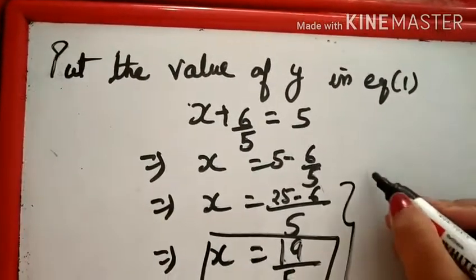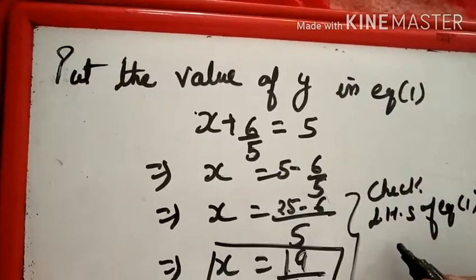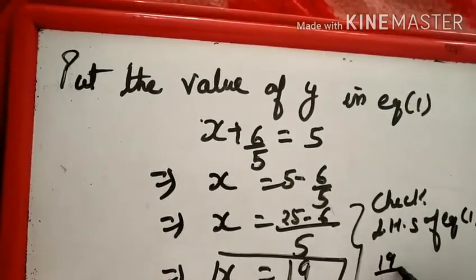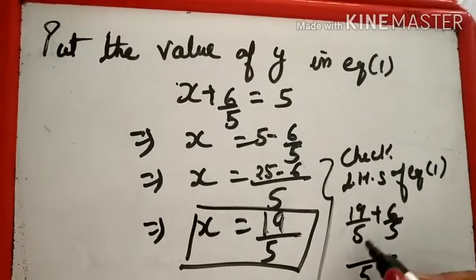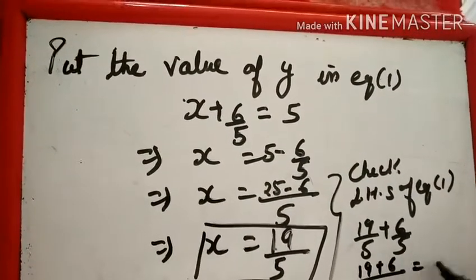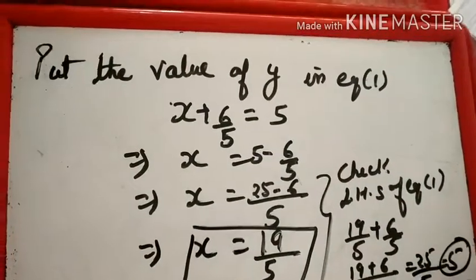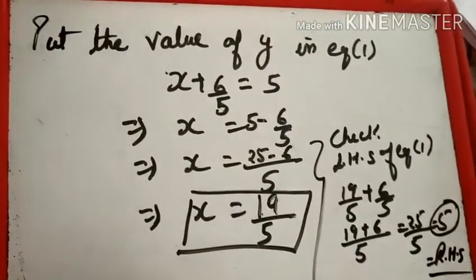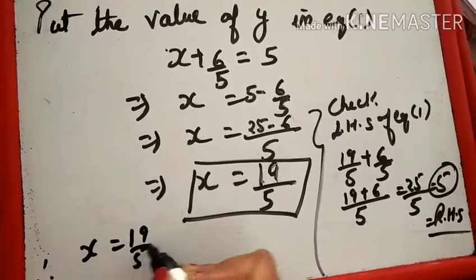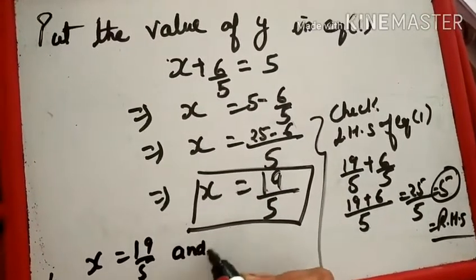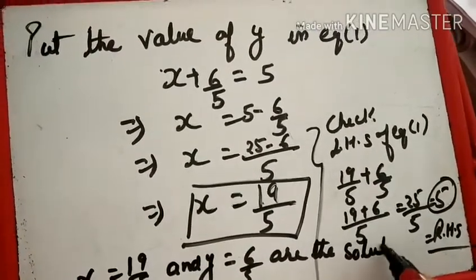Check निकाल सकते हो: LHS of Equation First: X + Y = 19/5 + 6/5. LCM is 5, so (19 + 6)/5 = 25/5 = 5, equal to RHS। यानि कि हमारा ठीक है। Therefore X = 19/5 and Y = 6/5 are the solutions.